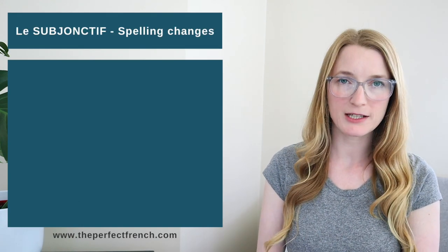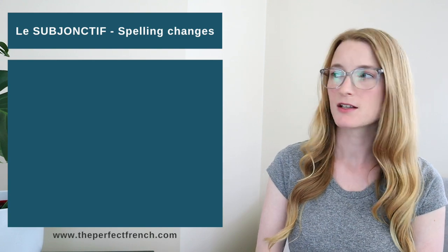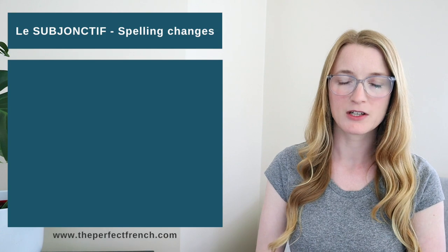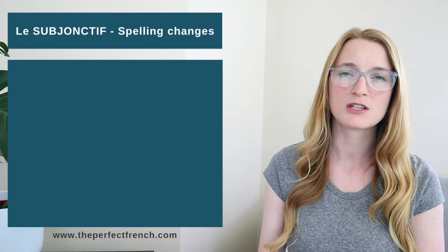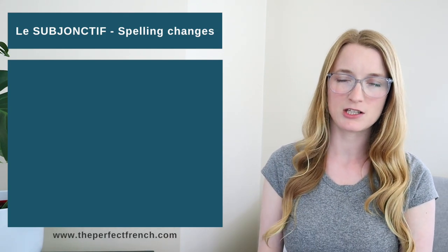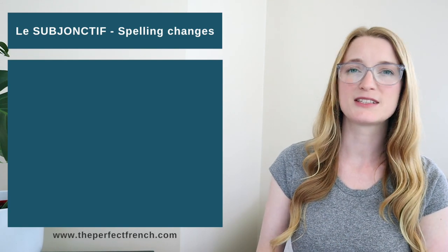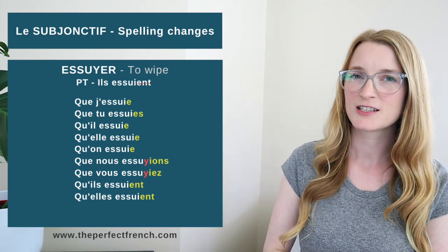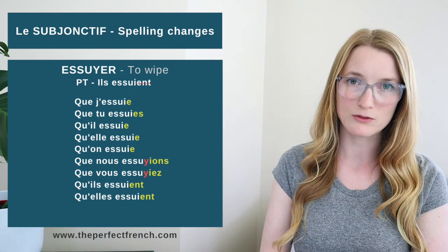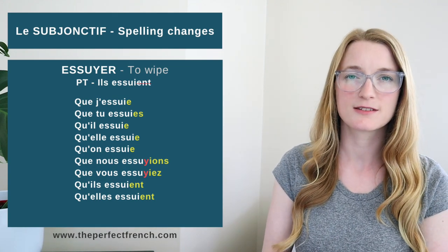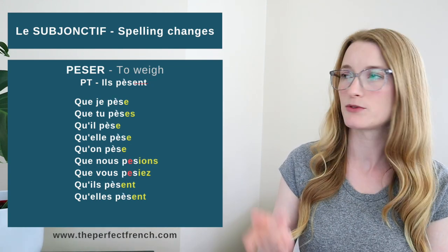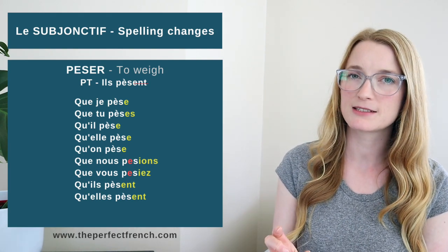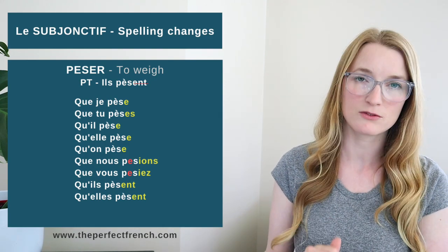Now, if you see the verbs with spelling changes that we saw at the beginning of the course — the ones with a spelling change in the stem — all the ones that change with nous and vous are going to keep the same changes in the subjonctif. For example, essuyer: que j'essuie, que tu essuies, and then Y for nous and vous. The spelling changes stay. Peser — for the present tense it was ils pèsent — we are going to keep pèse for everything but not for nous and vous.